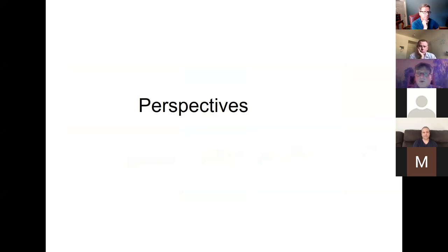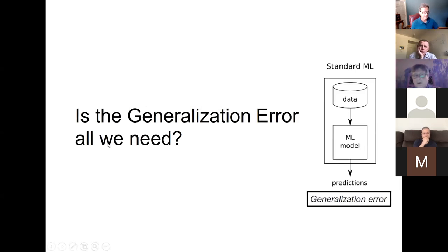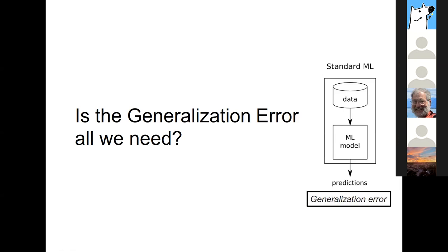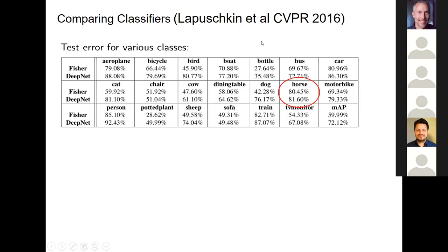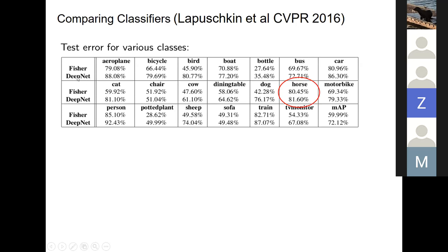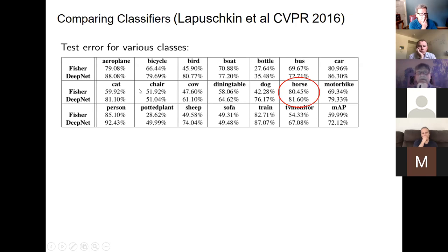Is the generalization error actually all that we need? From our 2016 paper, consider a standard computer vision exercise: two models, a bunch of classes, reporting out-of-sample generalization error. In some cases the deep model is way better — for birds or other categories. But in some cases it's about the same quality as a very good old seasoned model like Fisher's. So you'd think that for discriminating horses, both models should be similar.